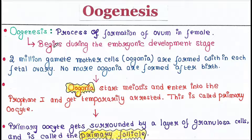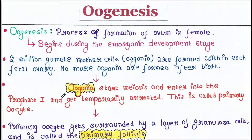Oogenesis begins during the embryonic development stage. Two million gamete mother cells, which are called oogonia, are formed within each fetal ovary. No more oogonia are formed after birth. These oogonia start meiosis and enter into prophase one and get temporarily arrested. This stage is called the primary oocyte.